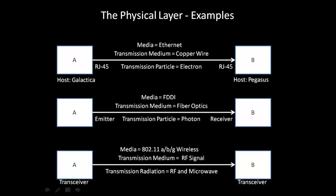Finally, in our last example, we're using wireless or 802.11 Wi-Fi. The media is 802.11 A, B, G, or N wireless. The transmission medium is an RF signal — not a particle, but radiation: RF and microwave. Host A has a transceiver and is simply modulating and sending RF energy out that's being received by host B.